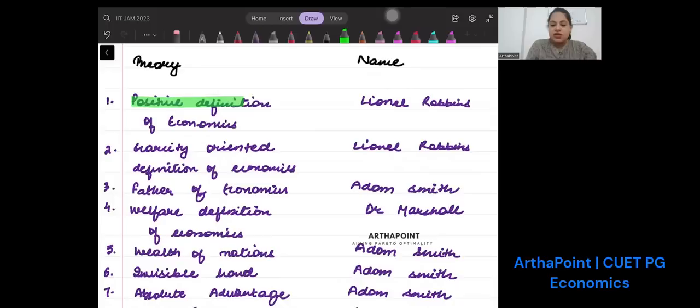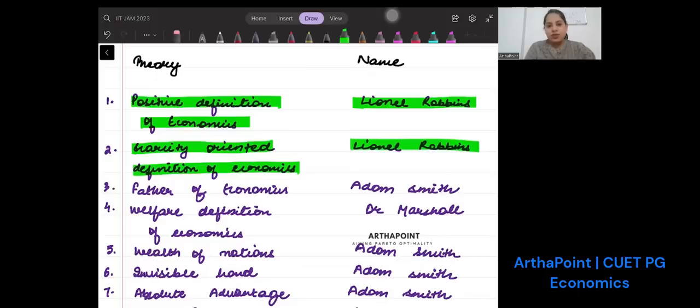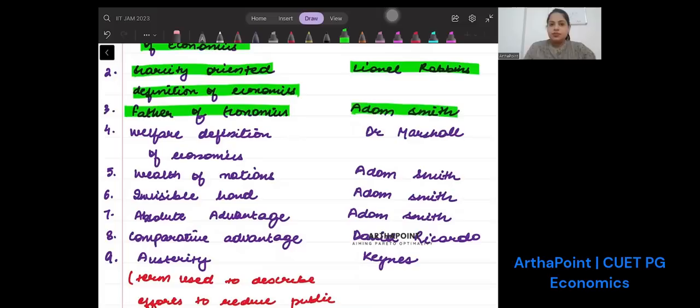Positive definition of economics was given by Leonel Robbins. Scarcity-oriented definition of economics was given by, again, Leonel Robbins. Father of economics was Adam Smith. Welfare definition of economics was given by Marshall.